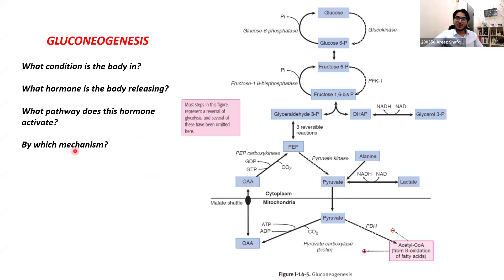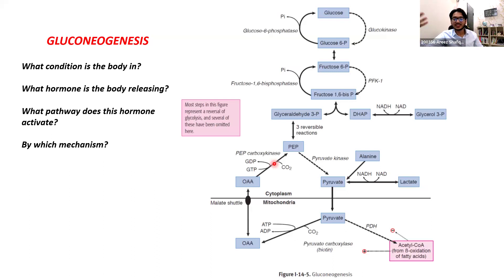Gluconeogenesis — what condition is the body in? For you to produce glucose, you should be in fasting or starvation conditions. What hormone would be active? Glucagon, epinephrine, cortisol — the counter-regulatory hormones. How do they act? They activate enzymes such as PEP carboxykinase by phosphorylation and at the gene level — the gene level being the major mechanism. Because it's at the gene level, gluconeogenesis takes some time to fully kick in.